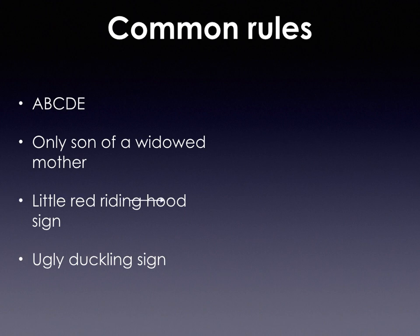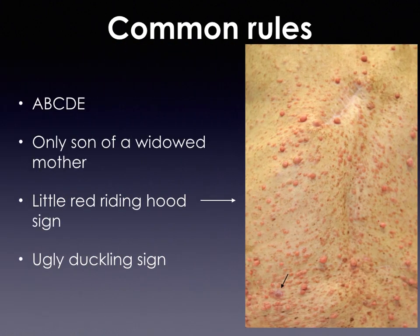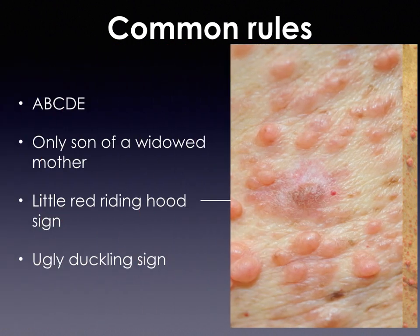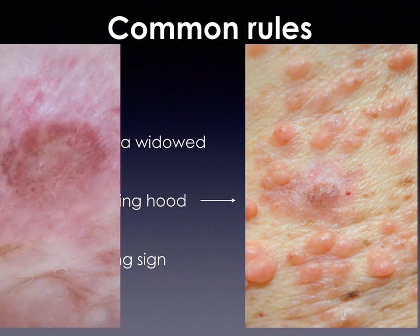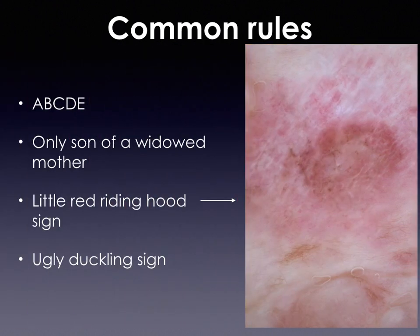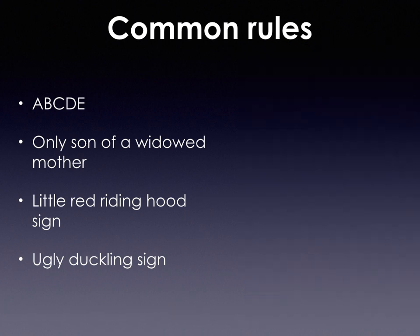For example, here you can see a patient with neurofibromatosis type one, with many skin tags and a pinkish nodule located on the back. In the close-up dermoscopic picture, we can see more than two criteria for an amelanotic melanoma, including polymorphic vessels, negative network, and melanin.